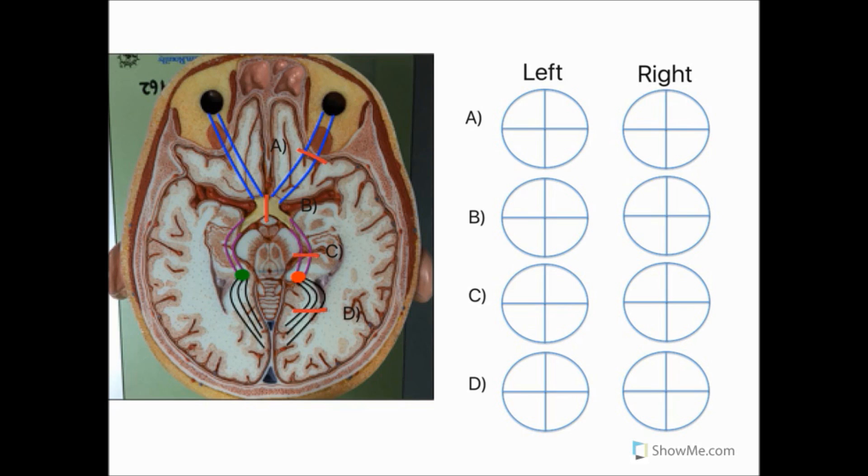So here I've drawn lesions in four parts of the visual pathway. Firstly the optic nerve, then the optic chiasm, the optic tract and Mayer's loop. Each of these results in four different patterns of visual loss. So before we go through each of these, it might be a good idea for you to pause the video now and see if you can work out the effect of each of these lesions by yourself.